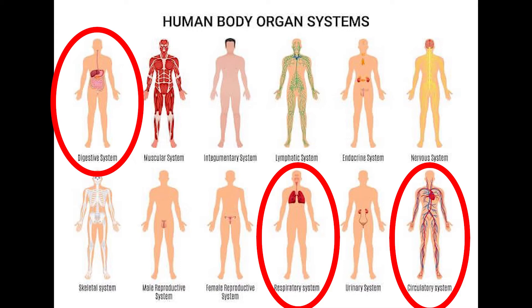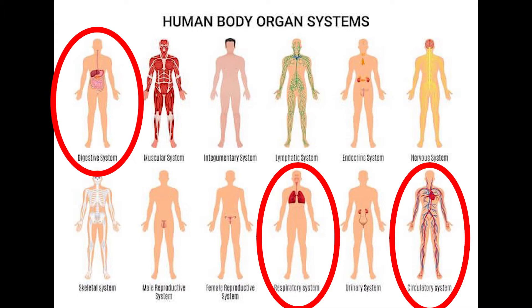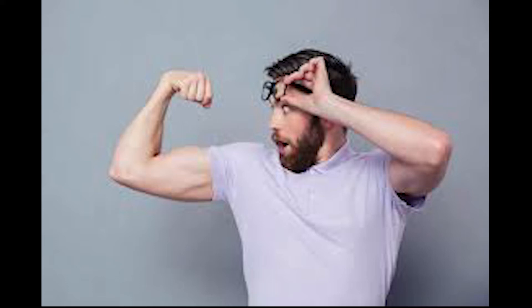To ensure that the effector works correctly, it relies on the circulatory, digestive, and respiratory systems. Our muscles require the circulatory system, as muscles demand huge amounts of oxygen which the circulatory system provides. This is because blood carries oxygen to the muscles. Blood also carries nutrients to our muscles, which is necessary for them to repair and rebuild.